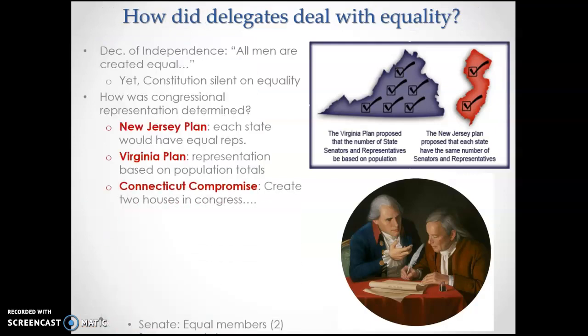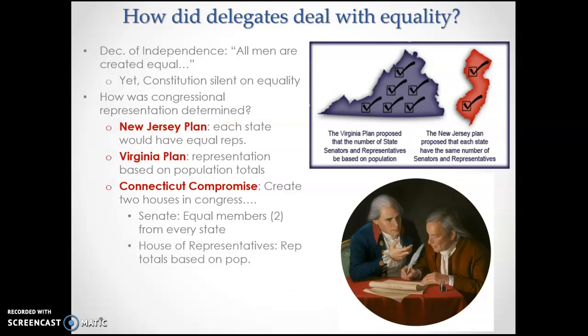We talked about how do we count people for representation in Congress. We talked about the New Jersey plan and the Virginia plan — one was based on population, which is what Virginia wanted because it was a big state, and New Jersey said they wanted equal representation. They figured out issues of equality through the Connecticut Compromise of splitting Congress into two halves: a Senate and the U.S. House of Representatives.